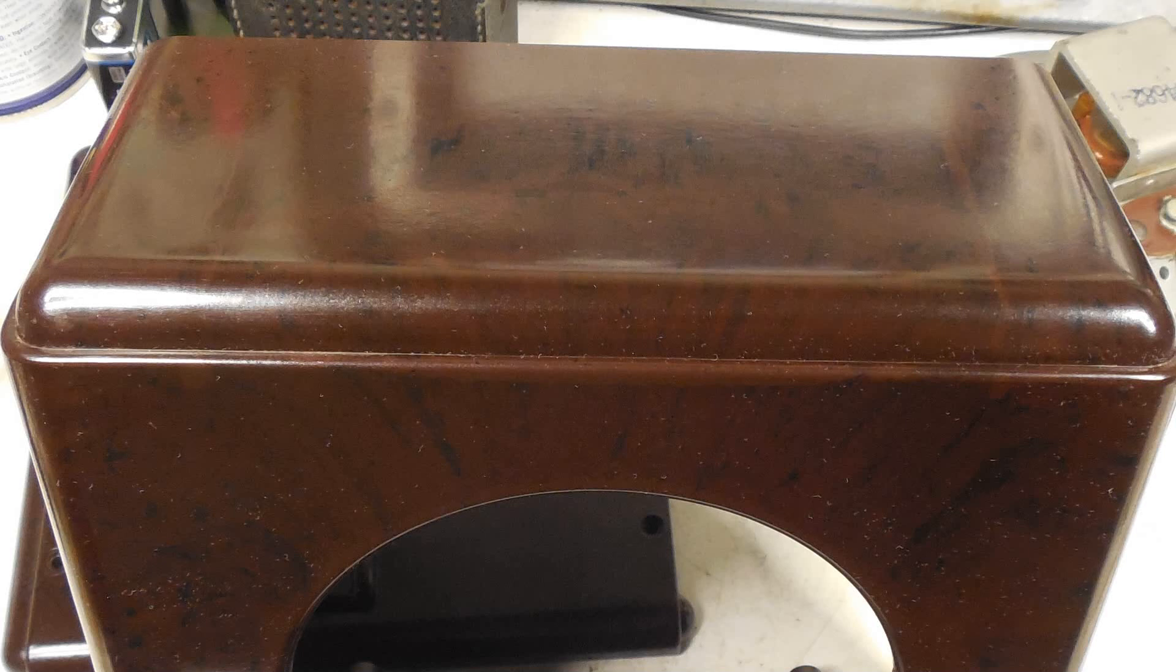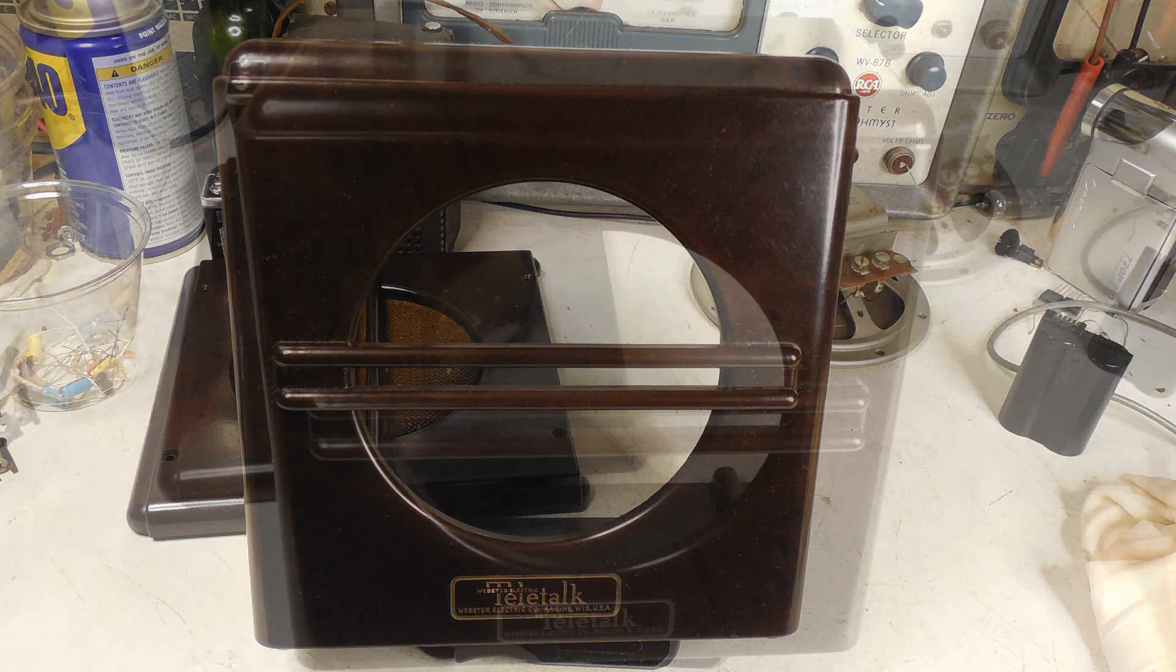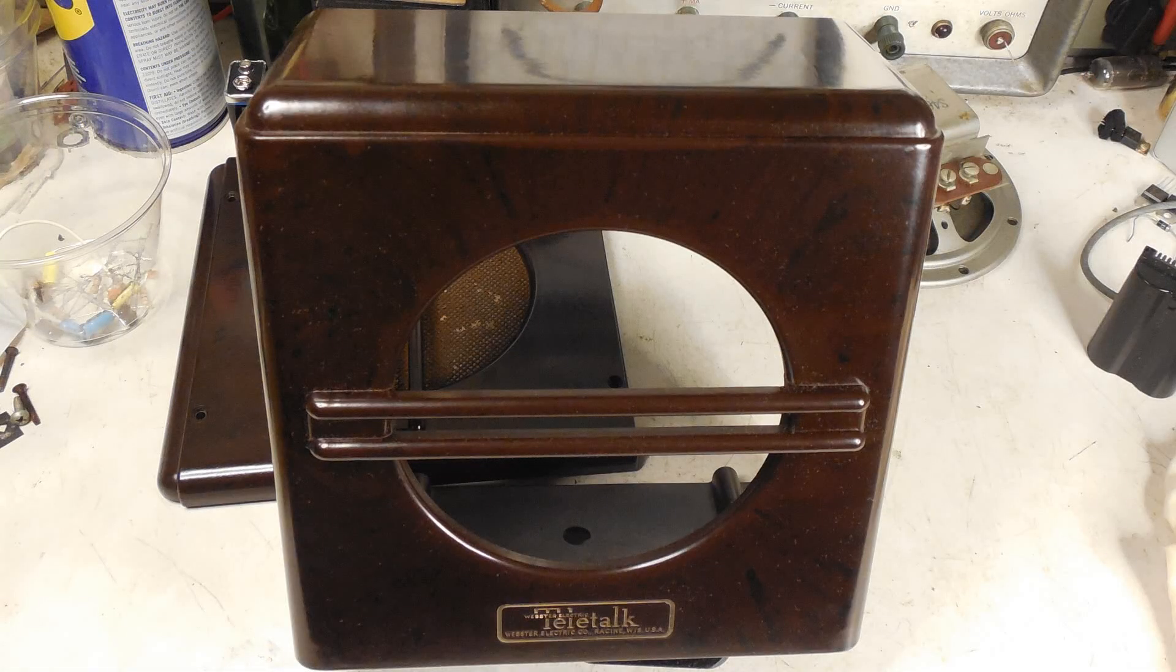Now I've tried gel stain, which actually I like better. But that seems to be getting harder to find. And another color that I've used is walnut. Not the dark walnut, but the lighter walnut. But some cabinets might require the dark walnut. Like I said, it depends on the color of the Bakelite.